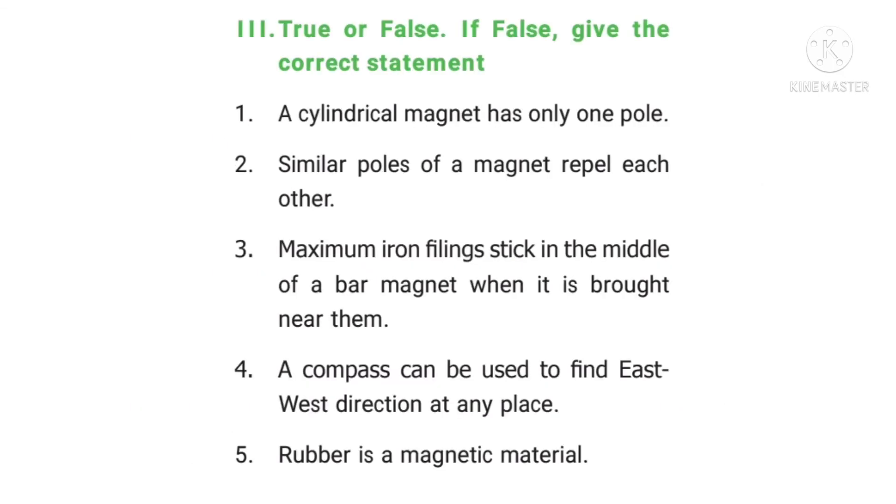Part 3: True or False? If False, give the correct statement. Question 1: A cylindrical magnet has only 1 pole. This is false statement. The corrected statement is, a cylindrical magnet has 2 poles.